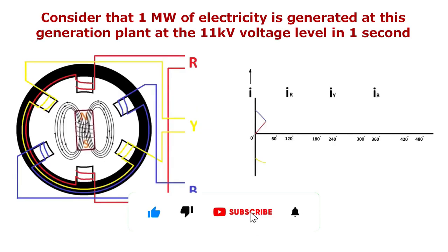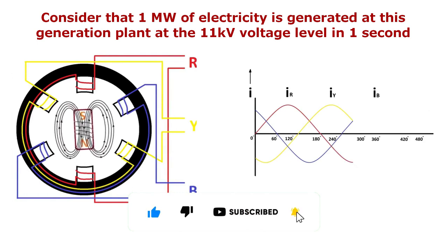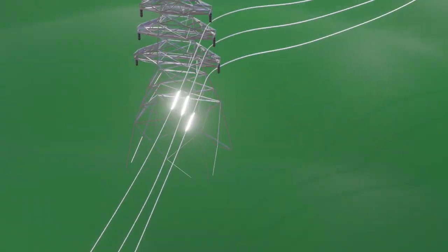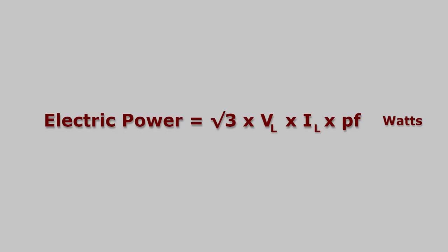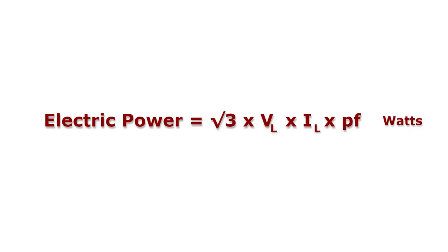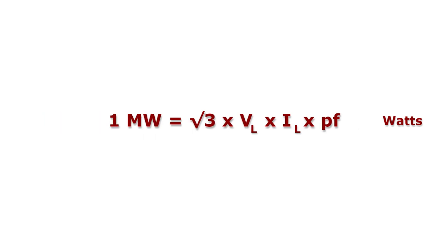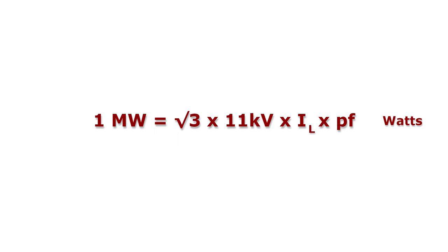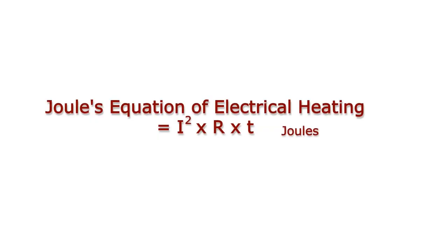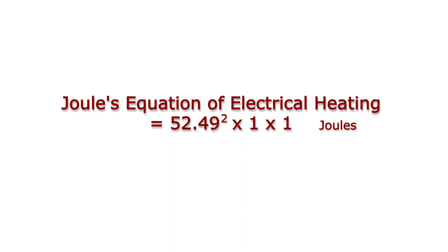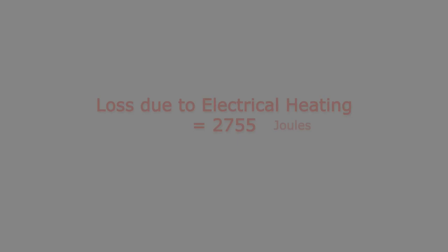Case 1: consider that 1 MW of electricity is generated at the generation plant at the 11 kV voltage level, and the same power is supplied to consumers at the same 11 kV voltage level without stepping up the voltage. Using the formula for electric power — watts equals root 3 times line voltage times line current times power factor — the current flowing through the transmission line is 52.49 amperes. Using Joule's equation of electrical heating (I²RT), with resistance R of 1 ohm and time T of 1 second, the loss due to heating equals 52.49² × 1 × 1, which is equal to 2,755 joules.